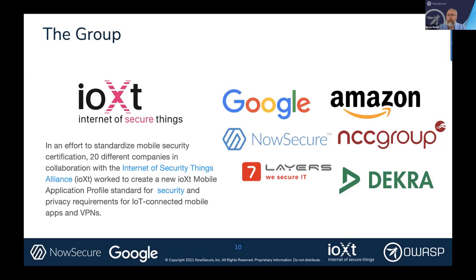A group of us — Google, Amazon, NowSecure, NCC Group, Seven Layers, and Durka, with a handful of others in review — got together and asked: what can we do about creating a certification regime for mobile apps that connect to IoT devices? Some members of the VPN community joined as well, so we said, okay, mobile apps and mobile VPNs — what can we do about that? The group got together and started on a project.